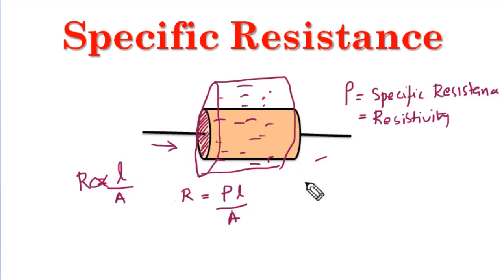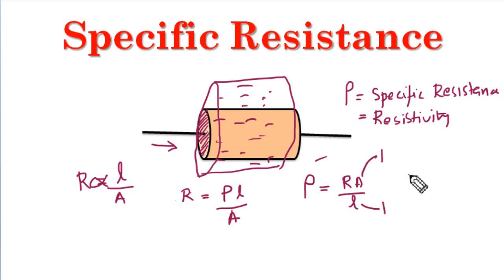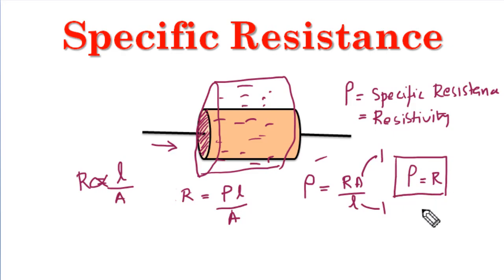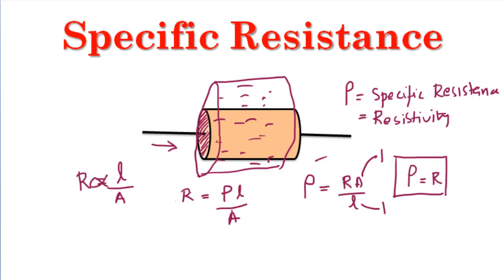Considering the formula R = ρL/A, if we set area equal to 1 and length equal to 1, then rho equals R. That means resistivity, or specific resistance, is the resistance of a material of unit length and unit cross-sectional area. You can find the resistivity values of different materials such as copper, iron, and aluminium by doing a search on the internet.